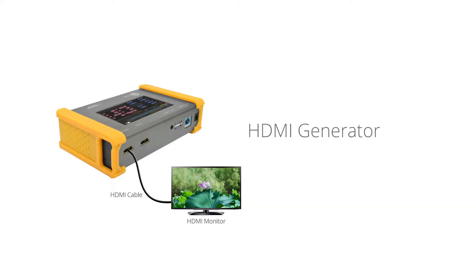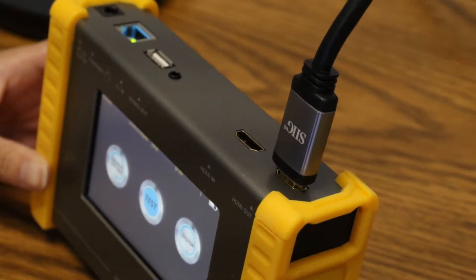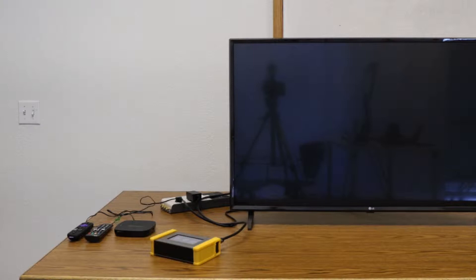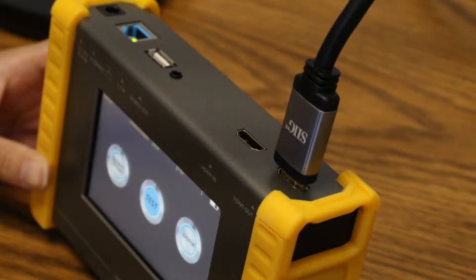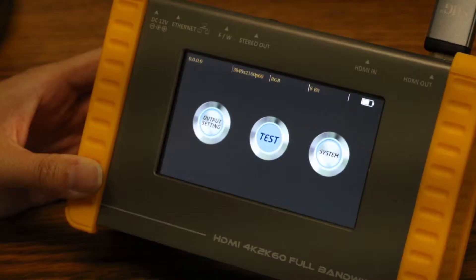First, you can use this as an HDMI generator, which means our product mimics a source that is connected via HDMI cable to a TV. The purpose is to see if the TV is capable of different resolutions and refresh rates, such as 4K at 60Hz.